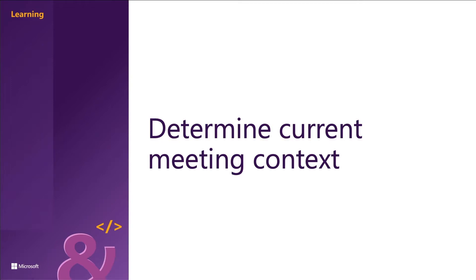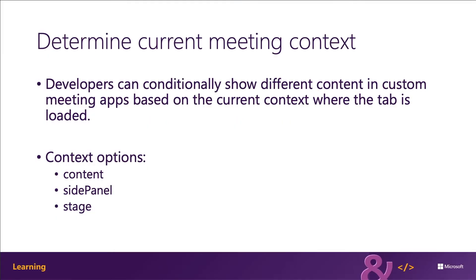Now let's talk about the meeting context. Developers can conditionally show different content in custom meeting apps based on the current context where the tab has been loaded. Meeting apps can be rendered in the following different locations: in the content section, which is the main area of a meeting where the details and files tabs are found — commonly used for the pre- and post-meeting experience — and the side panel, which is always available when the user has joined a meeting that's currently in process.